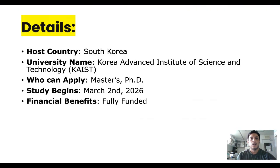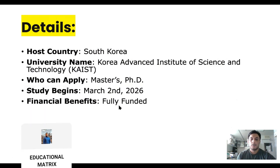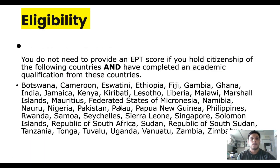The host country is South Korea. The university is KAIST — Korea Advanced Institute of Science and Technology. Master and PhD students can apply, and study will begin in March. For eligibility, you do not need to provide any EPT score; there is a criteria in their application about the EPT score.